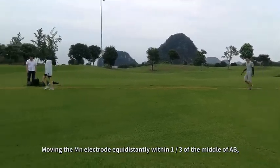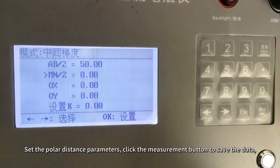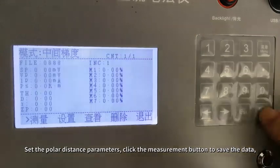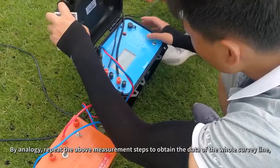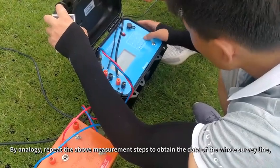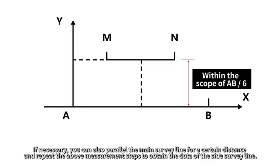Moving the MN electrode equidistantly within 1/3 of the middle of AB, set the polar distance parameters. Click the measurement button to save the data. By analogy, repeat the above measurement steps to obtain the data of the whole survey line. If necessary, you can also parallel the main survey line for a certain distance and repeat the above measurement steps to obtain the data of a side survey line.